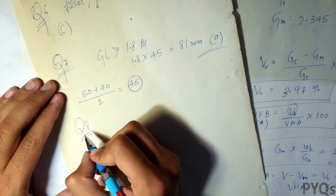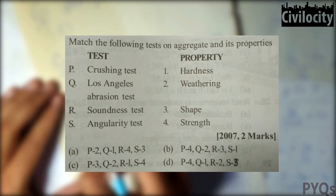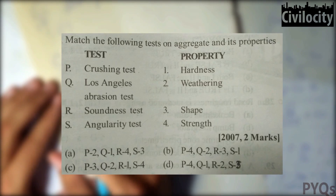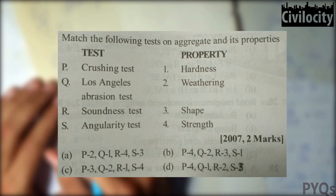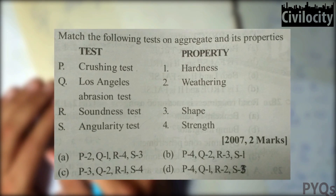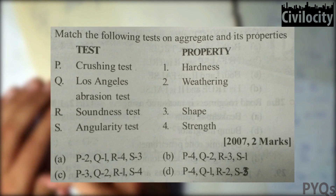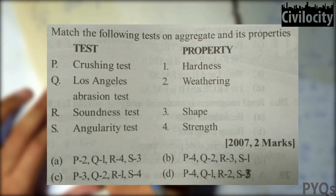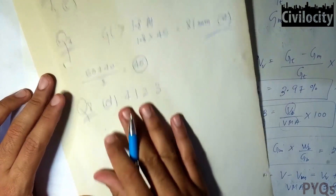Question eight asks to match crushing load, Los Angeles test, soundness test, and angularity test with hardness, weathering, shape, and strength. Soundness test relates to weathering, angularity to shape, crushing to strength, and Los Angeles to hardness. The answer is D: 4, 1, 2, 3.